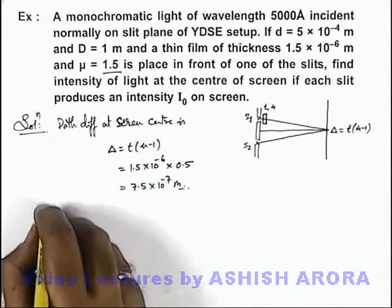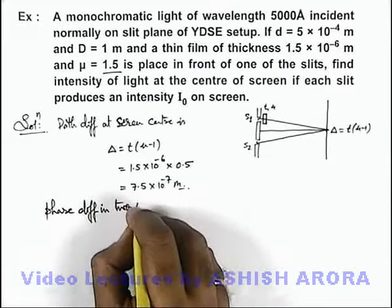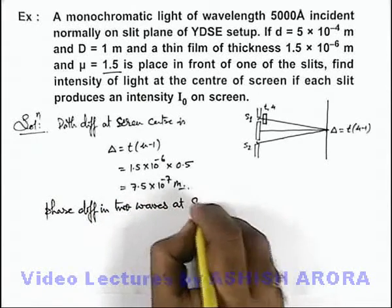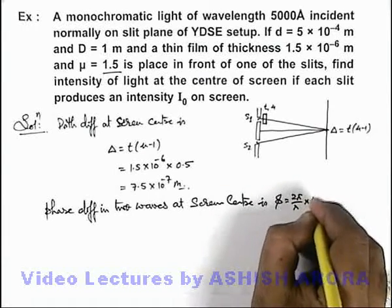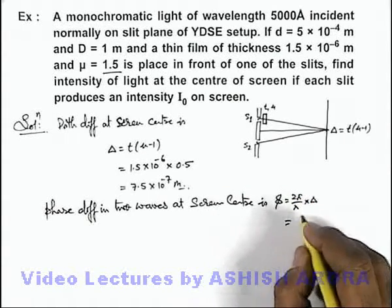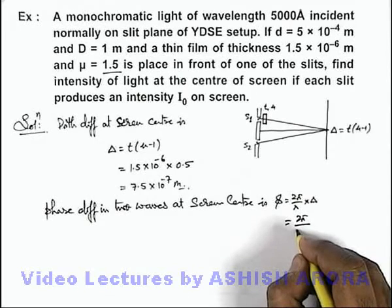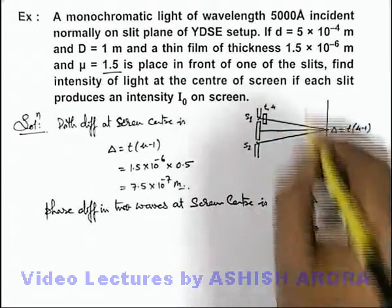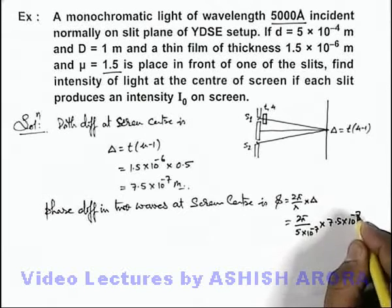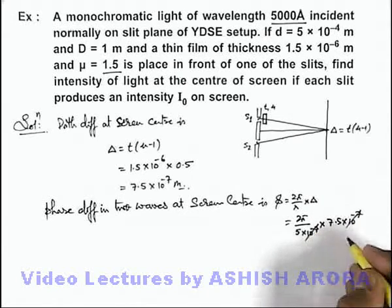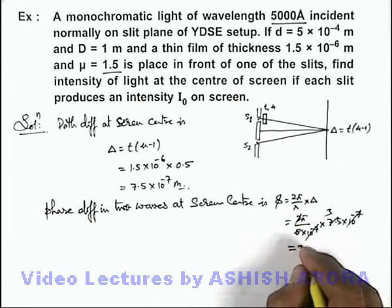Corresponding to this path difference, we calculate the phase difference between the two waves at the screen center. The phase difference is 2π/λ multiplied by the path difference. So it is 2π divided by 5 × 10⁻⁷ (since wavelength is 5000 angstrom) multiplied by 7.5 × 10⁻⁷. The 10⁻⁷ terms cancel, and for 7.5/5 we get 1.5, so 2π × 1.5 gives a phase difference of 3π.